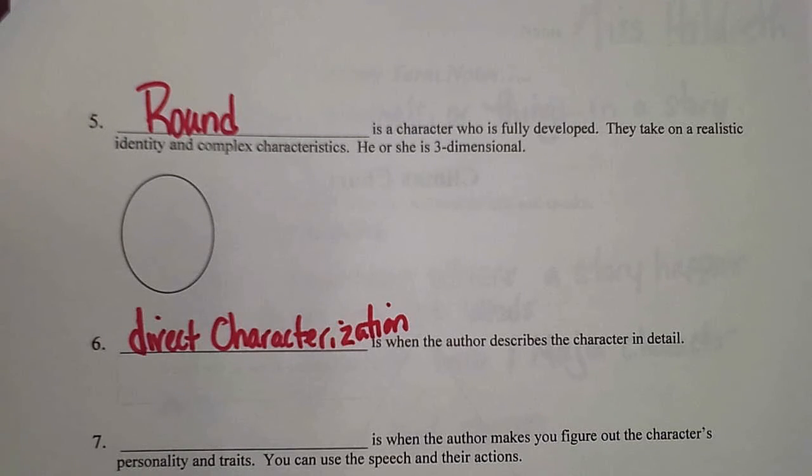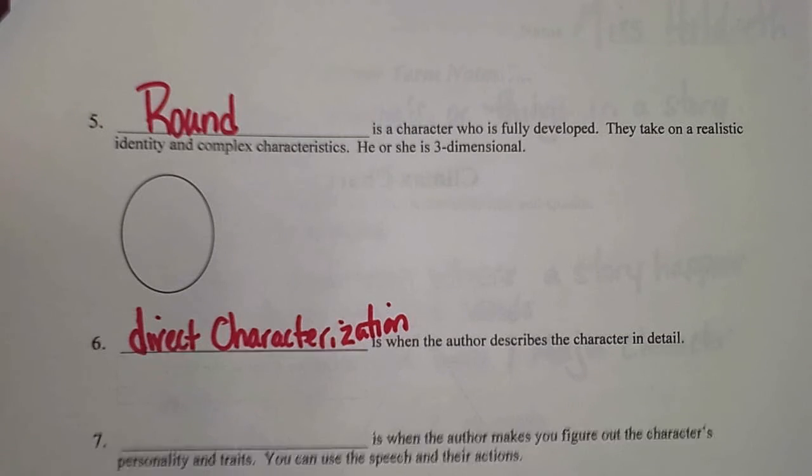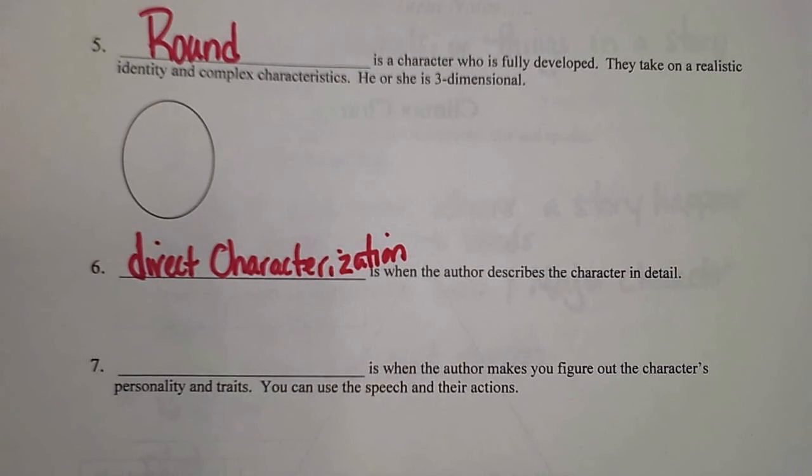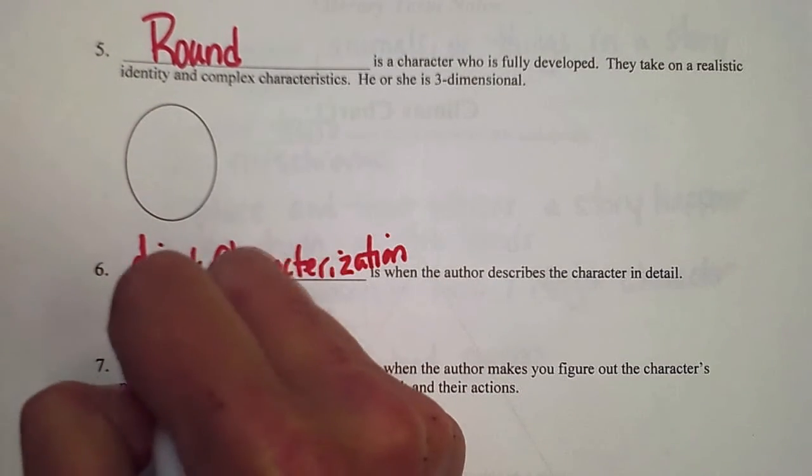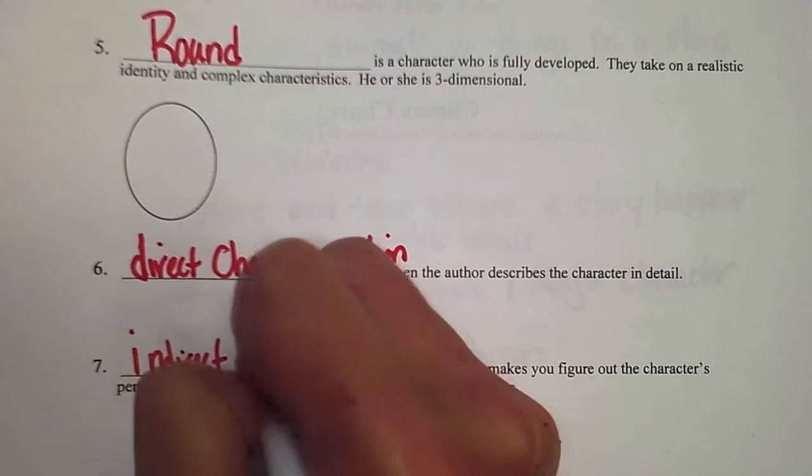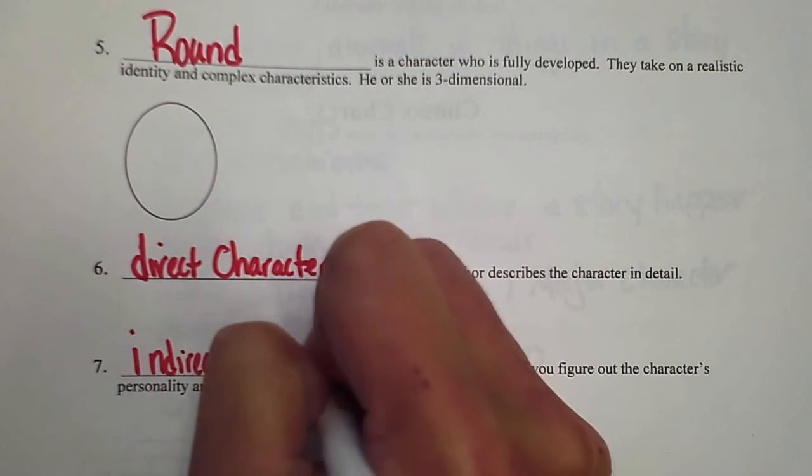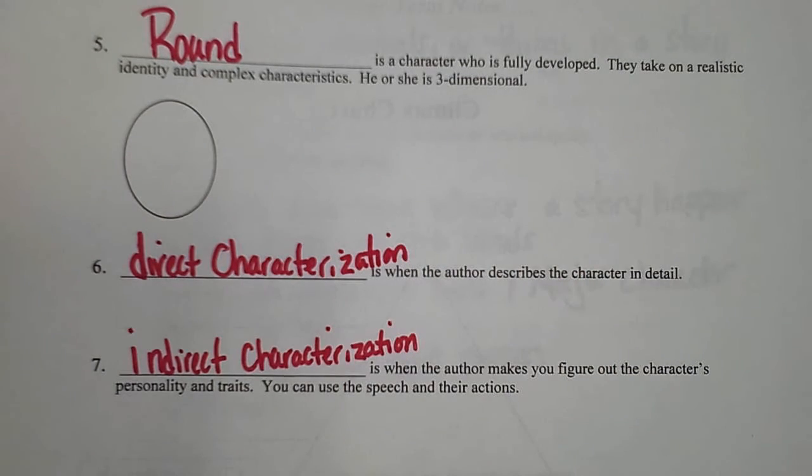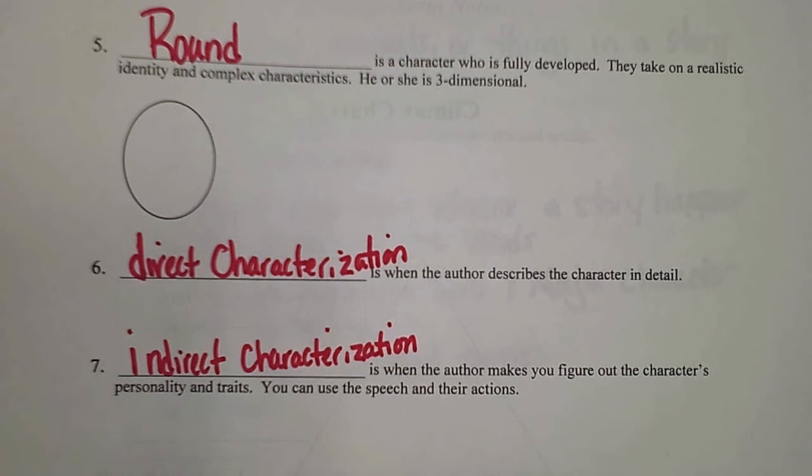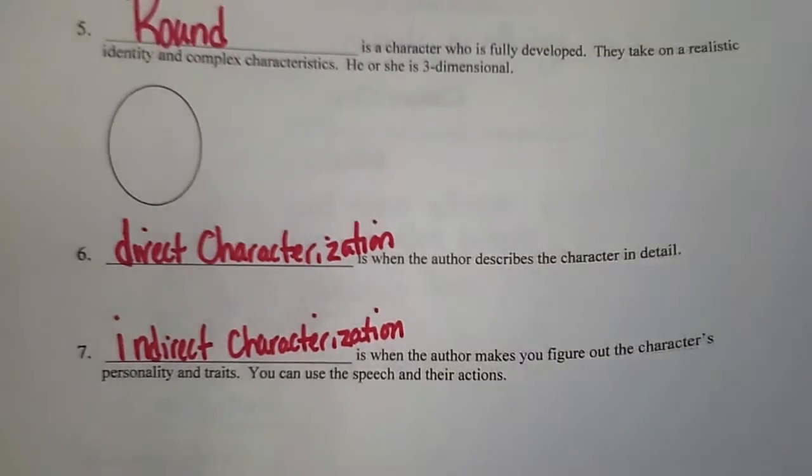The last one on this page for characters: indirect characterization is when the author makes you figure out the character's personality and traits. You can use their speech and actions. You basically get to be a detective and use clues given to you in the story to figure out what the character thinks and how they act.